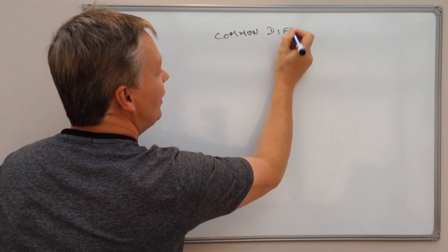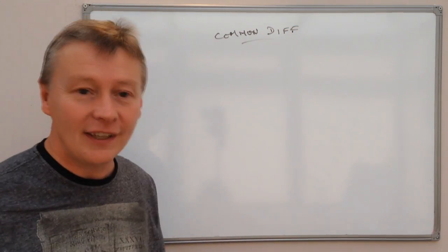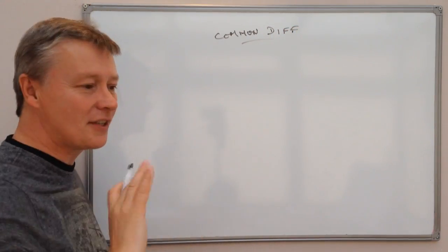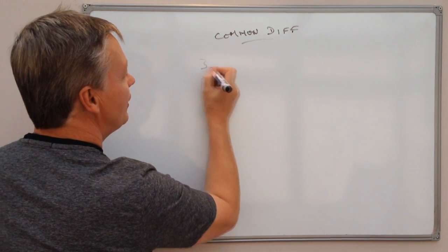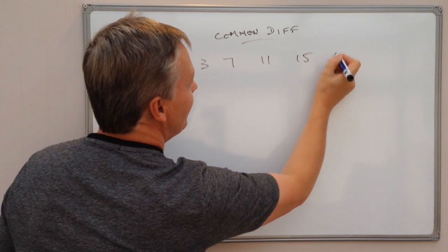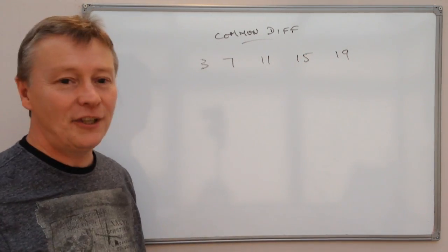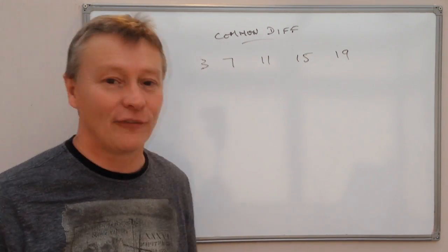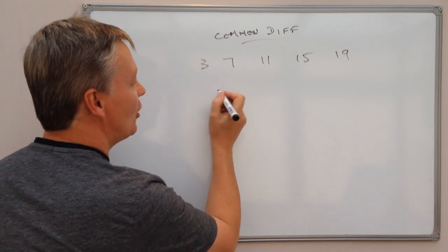What it looks like is that you might get an exam question and it'll say something like you've got 3, 7, 11, 15, 19, and you need to write an expression for the nth term.